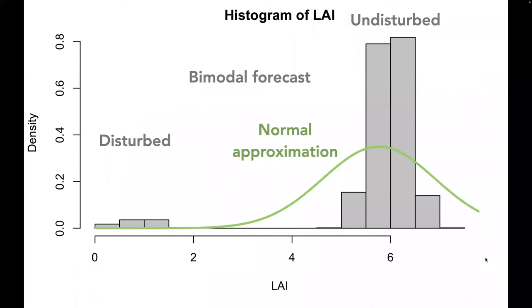The first thing we need to do is understand why conventional approaches, such as the Ensemble Kalman filter, fail to capture disturbance. This figure shows a bimodal forecast in gray containing both undisturbed and disturbed ensemble members. Conventional data simulation approaches approximate forecasts using a normal distribution, which, in this case, fails to capture the disturbed cases entirely and inflates the variance of the undisturbed cases.